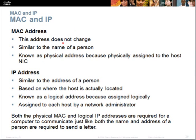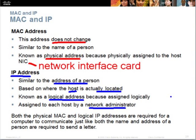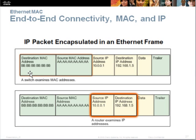The MAC address is similar to a person's ID — it does not change. It is known as the physical address because it is physically assigned to the host's network interface card. The IP address, on the other hand, is like a person's home address — it depends on where the host is located. The IP address is also known as a logical address because it is assigned logically, normally by the network administrator. Both MAC address and IP address are required for computer communication.